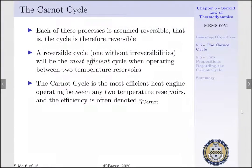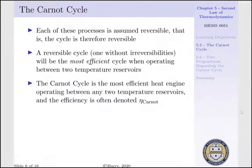The Carnot cycle is comprised of reversible processes. Each of the processes within our Carnot cycle is assumed reversible, and therefore the cycle itself is reversible. A reversible cycle — one without any irreversibilities — will be the most efficient cycle when operating between two temperature reservoirs. The Carnot cycle is the most efficient cycle governing heat engines operating between any two temperature reservoirs, and the efficiency of the cycle is of utmost importance.